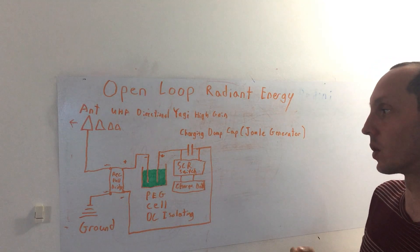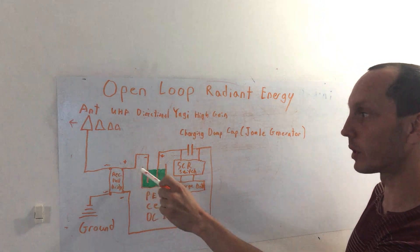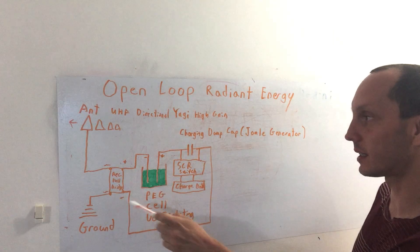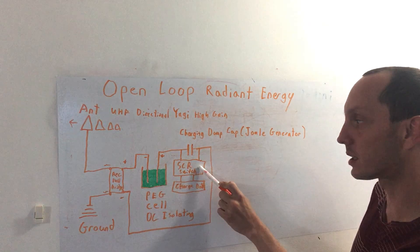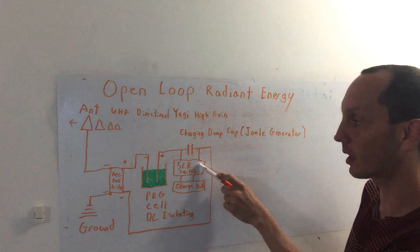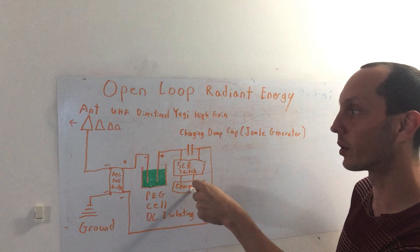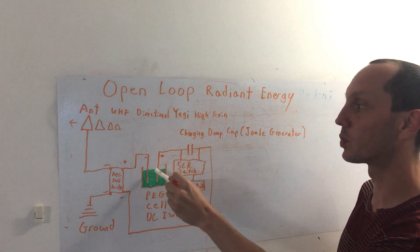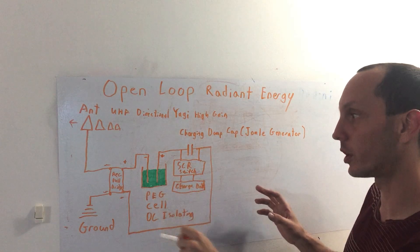Here we run our PEG cell as the DC isolating loop. It charges a capacitor and we have an SCR switch. I just simplified it, could be anything you want, but this is self-triggered. And then the charging battery here, once it reaches the trigger, it takes the load off the traditional closed loop.